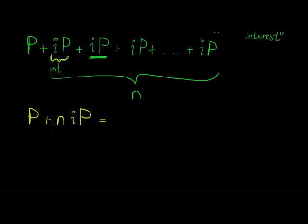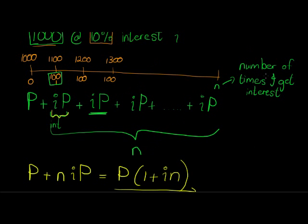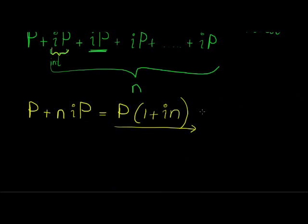And from here, I can now just take out P as a common factor. So I have P times 1 plus, and I'm just changing a little bit around, in. And this is a formula to work out how much I will have in the bank or in my savings or wherever this money is growing at in the end of the n times I get interest.